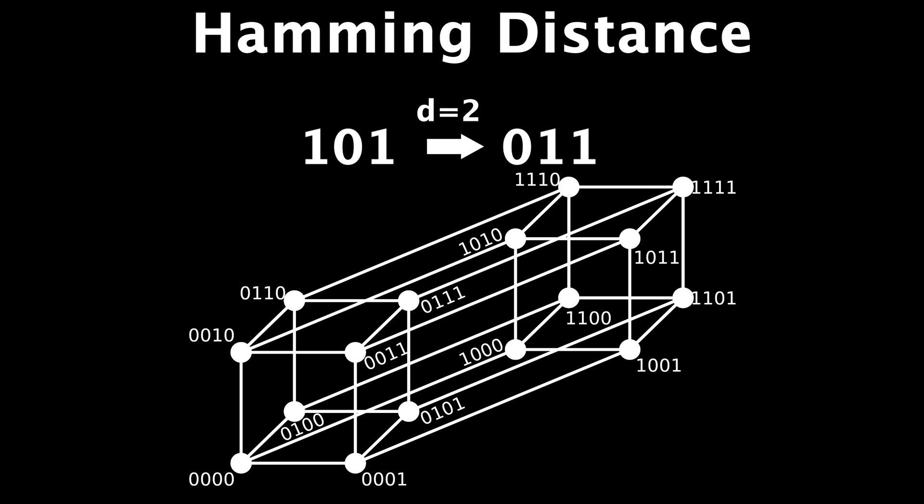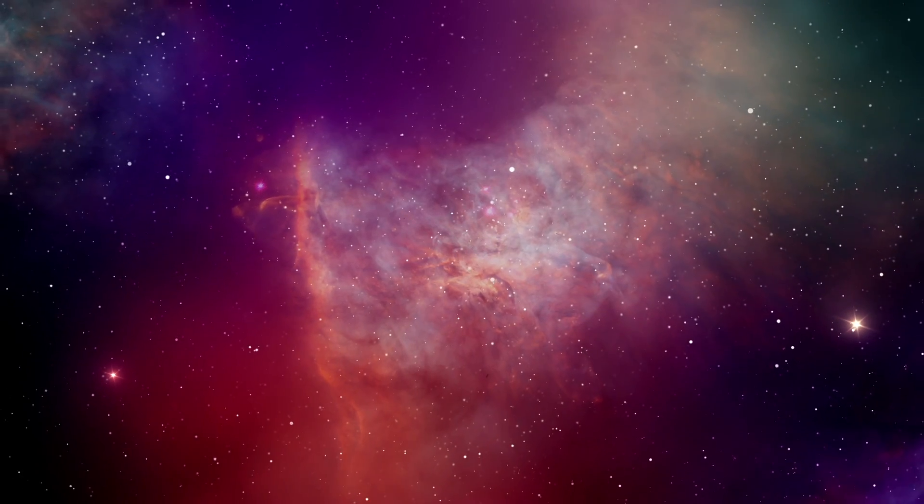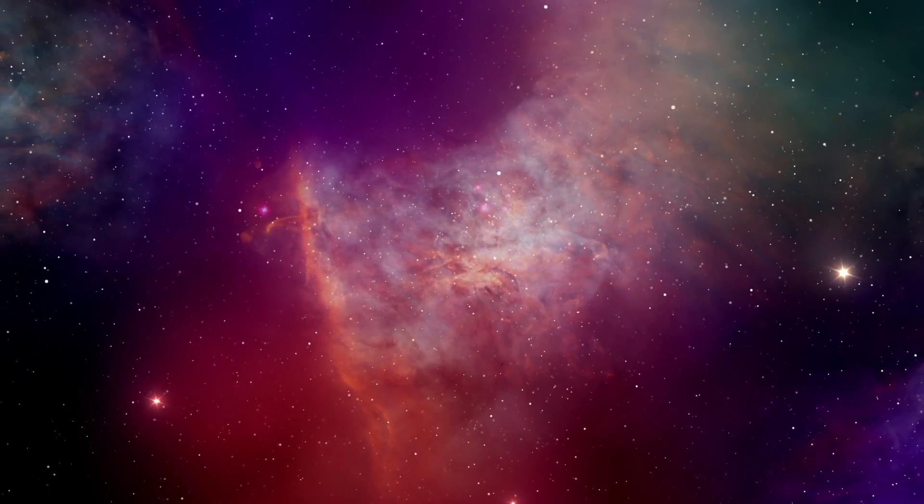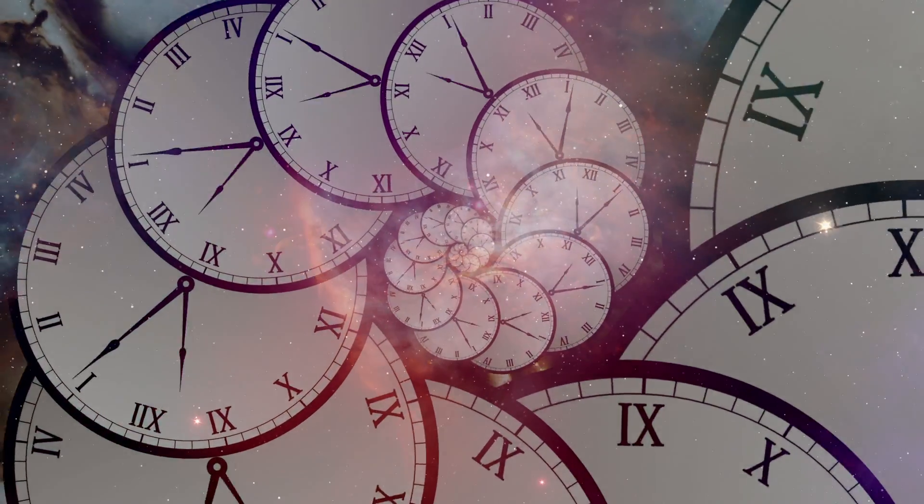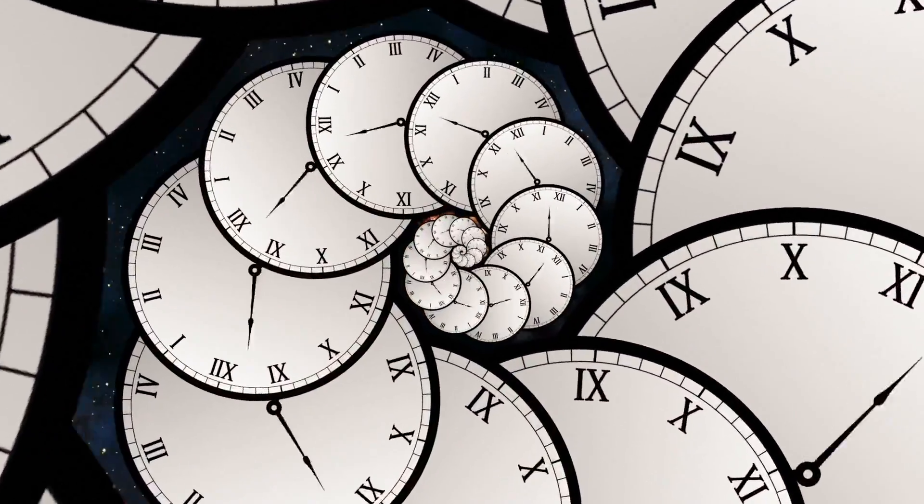And while metrics are used to define the distance between two points in space, as we've seen, they can also be used to define the distance between two events in spacetime. So metrics, as you can expect, are extremely important when dealing with relativity.